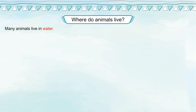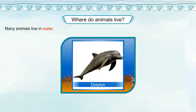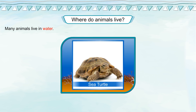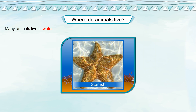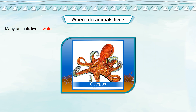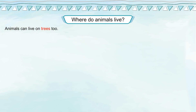Many animals live in water. Dolphin, sea turtle, jellyfish, starfish, fish, octopus. Animals can live on trees too.